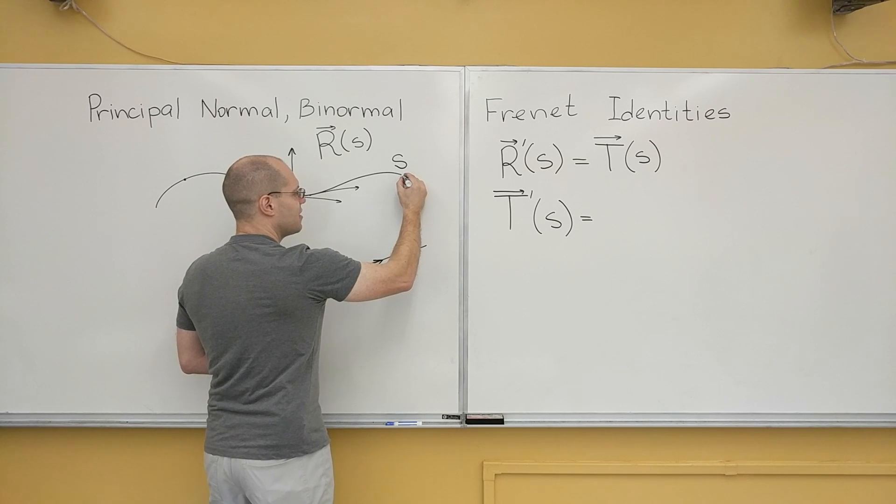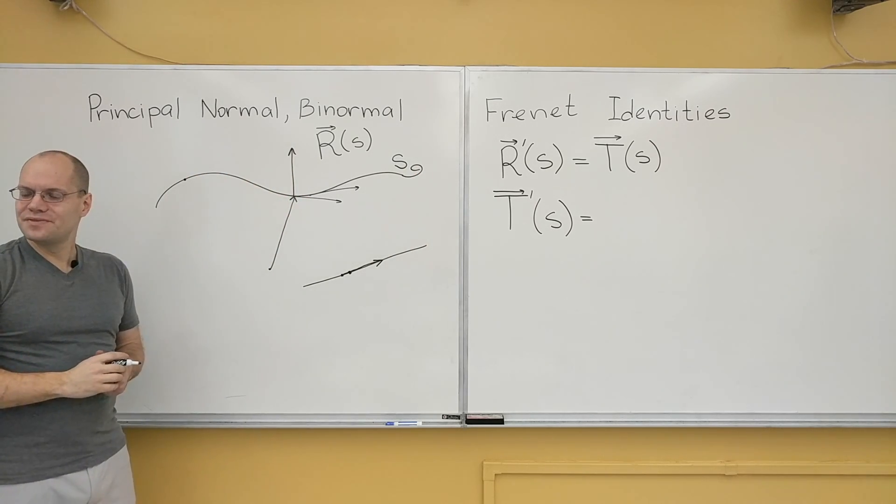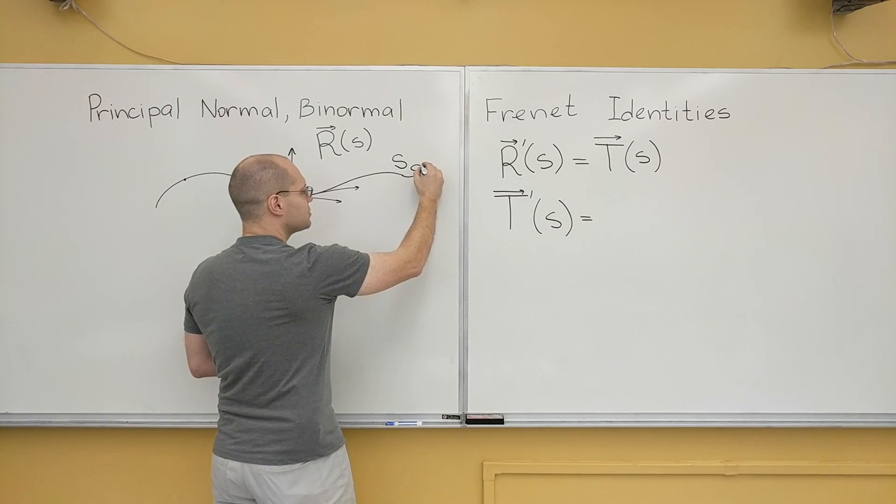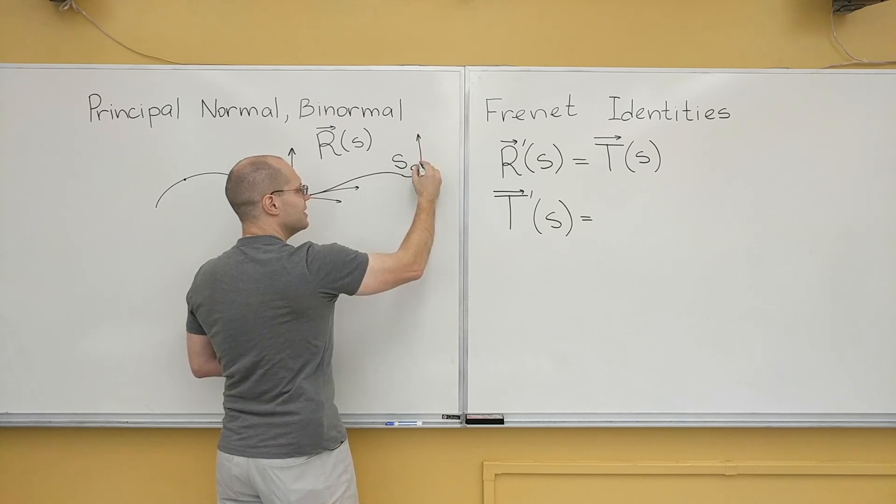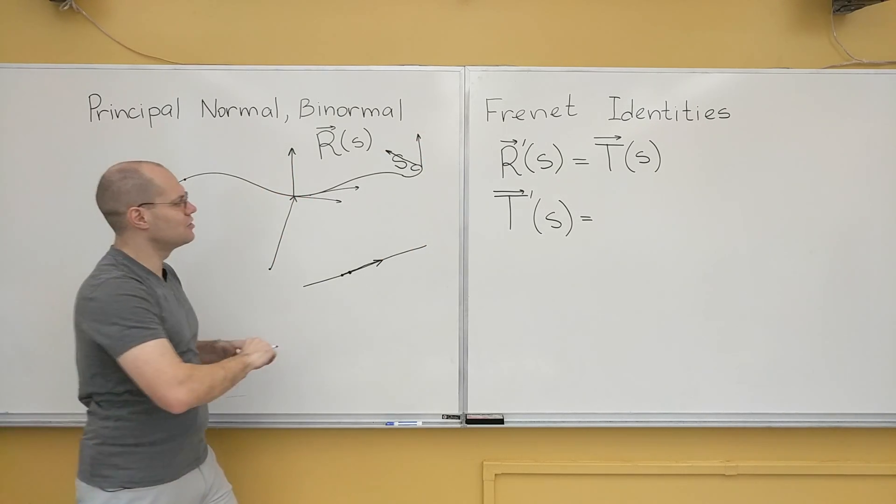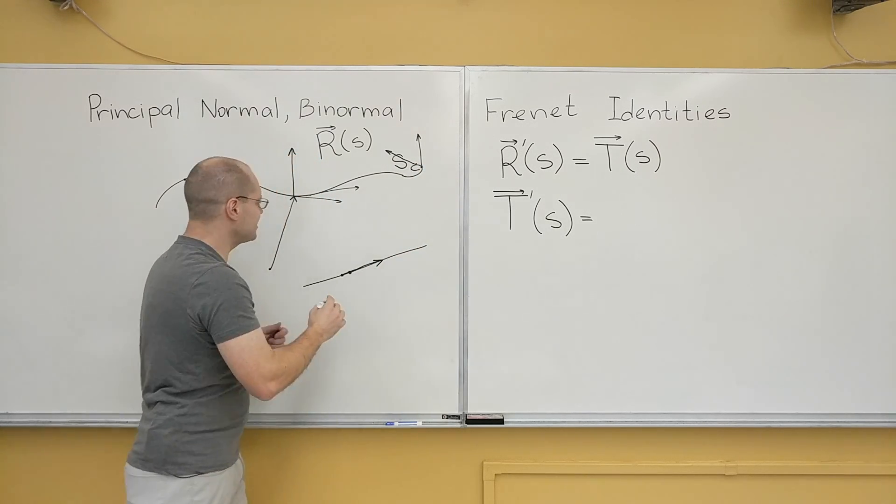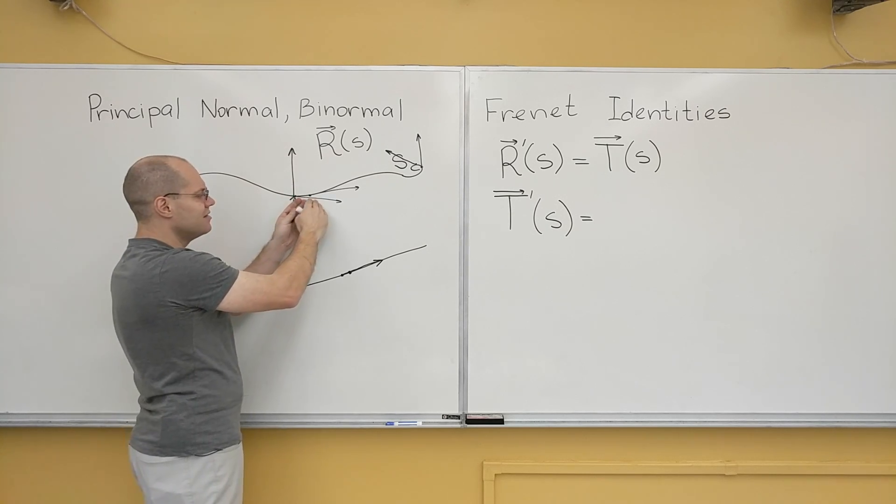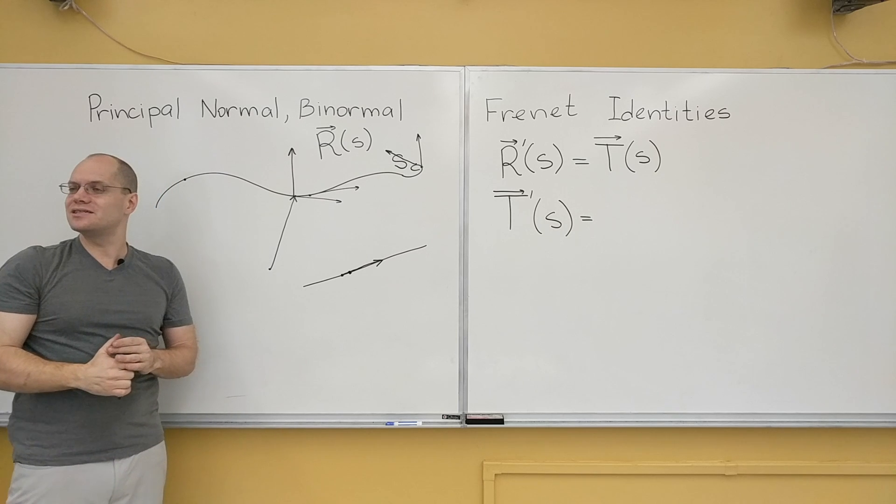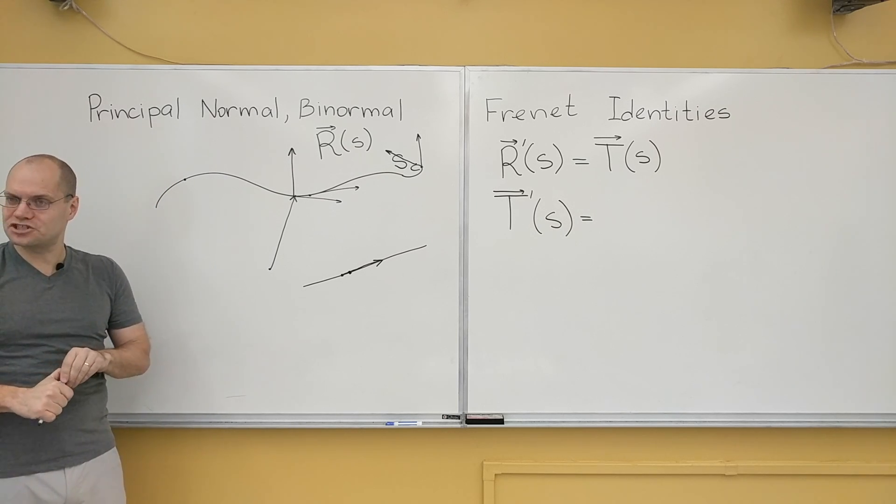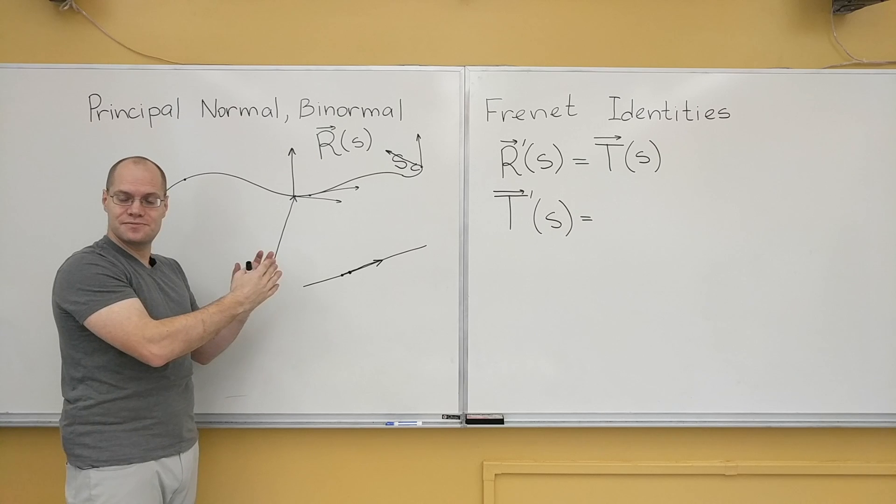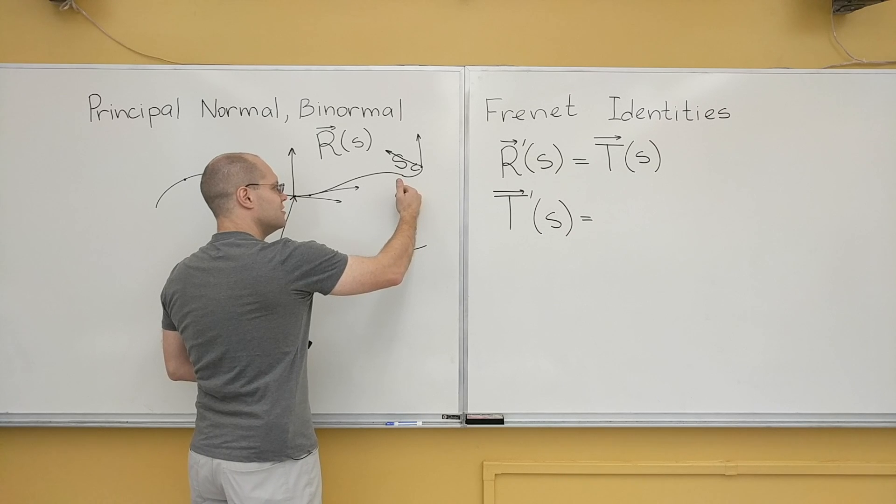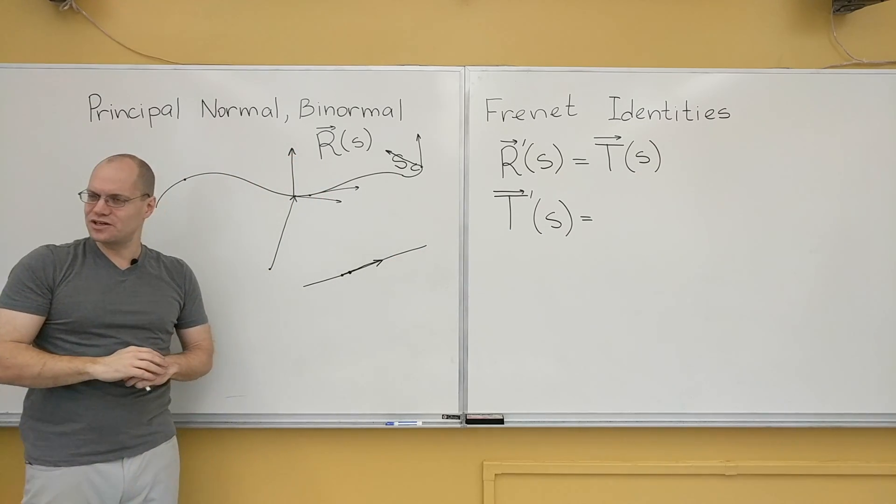Then think about how much of a change in the unit tangent will experience for a small difference in s. So look, from this point to this point, s changed as much, or actually half the amount that it changed from this point to this point. And here, the two tangents were pointing more or less in the same direction. There is definitely variation. And it's whatever it is. But it's not as dramatic as it is here.